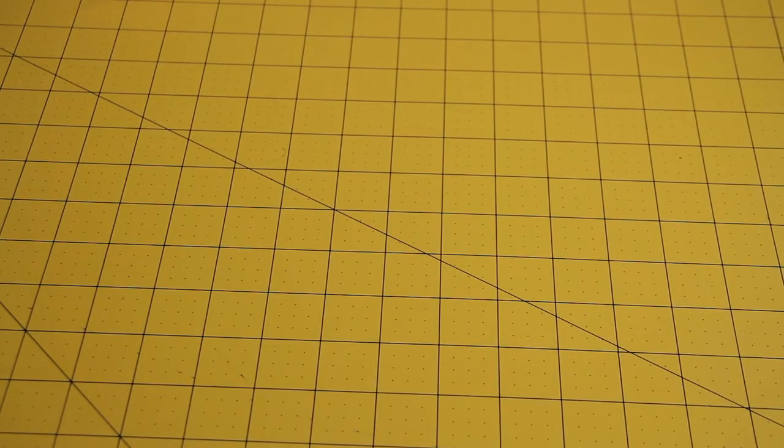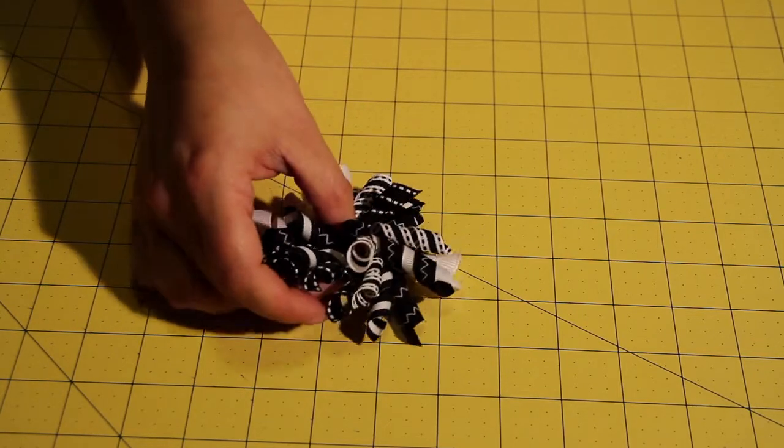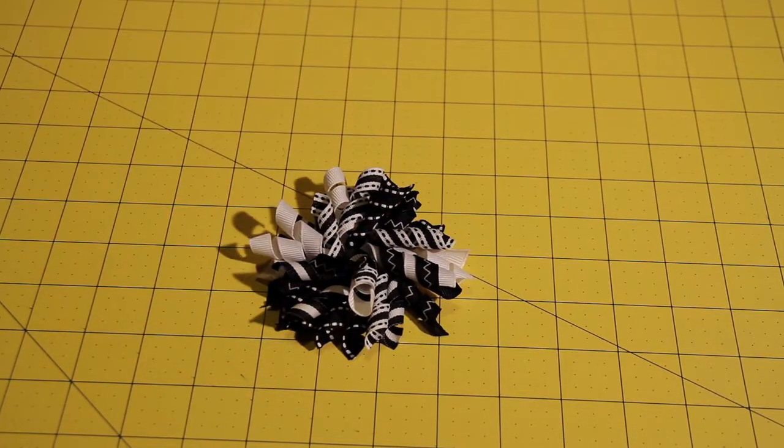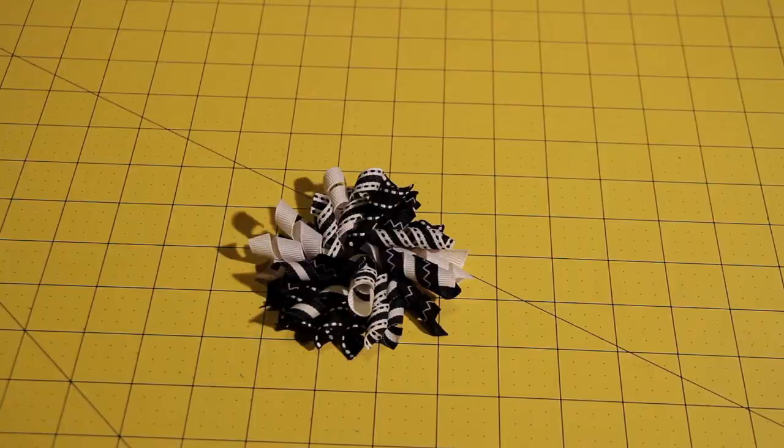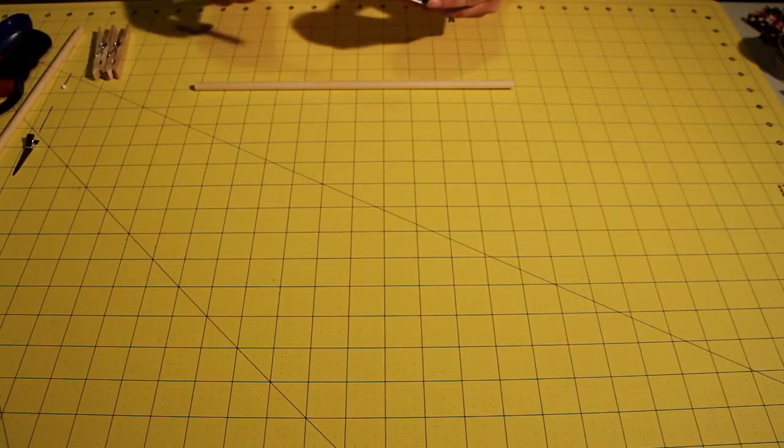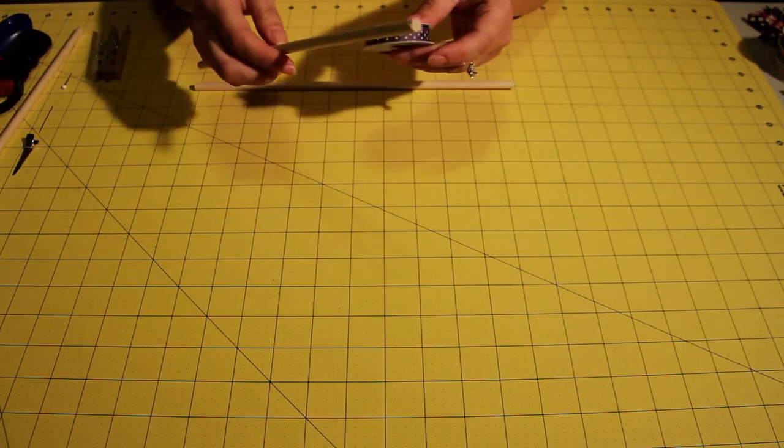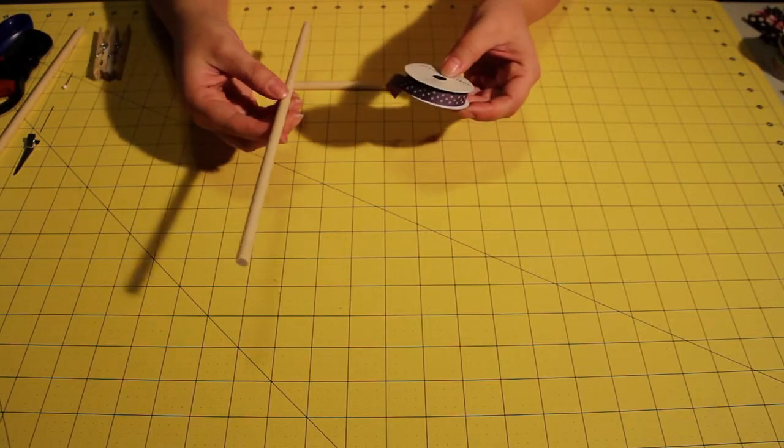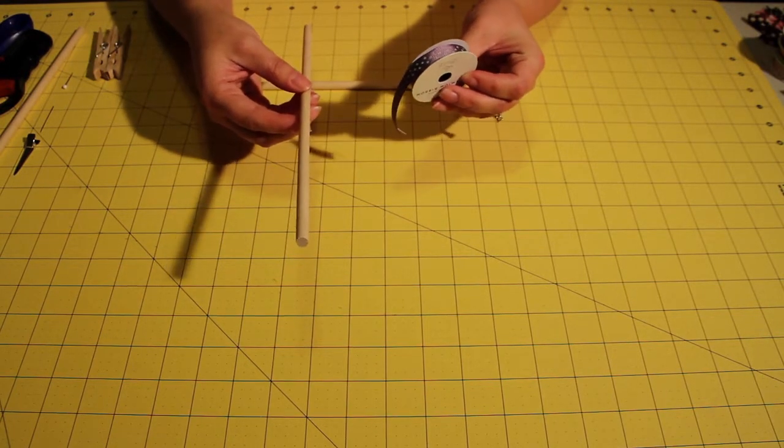So today I am going to be showing you how to make a 3 inch by 3 inch corkscrew bow. In order to make the corkscrew bow you are going to need your first step to make the corkscrew bow is you are going to need your dowel and your ribbon.